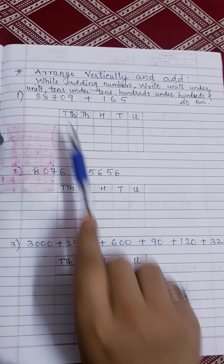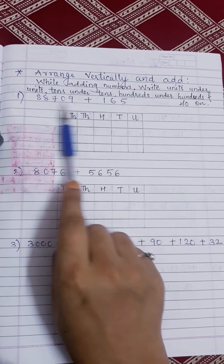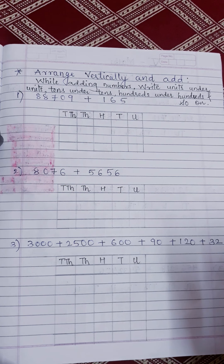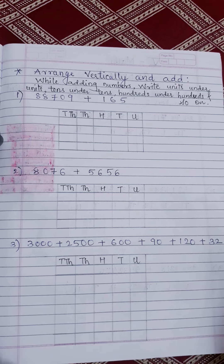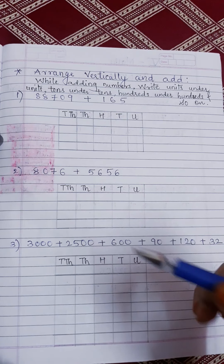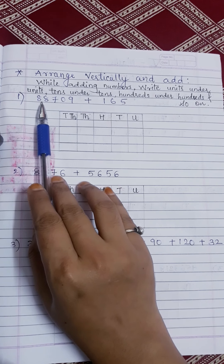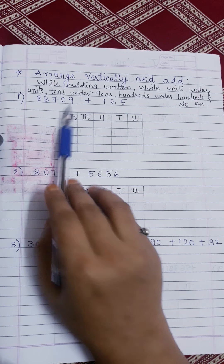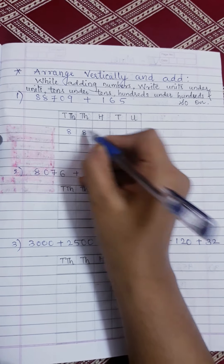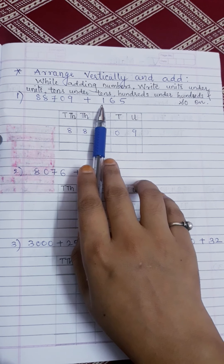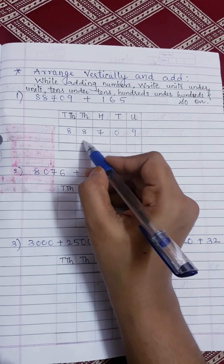Now here are some questions. Arrange vertically and add. You have to arrange them vertically and add. While adding numbers, write unit under unit, tens under tens, hundreds under hundreds, and so on. The first number is eighty-eight thousand seven hundred and nine, and here is a three-digit number: one hundred and sixty-five.